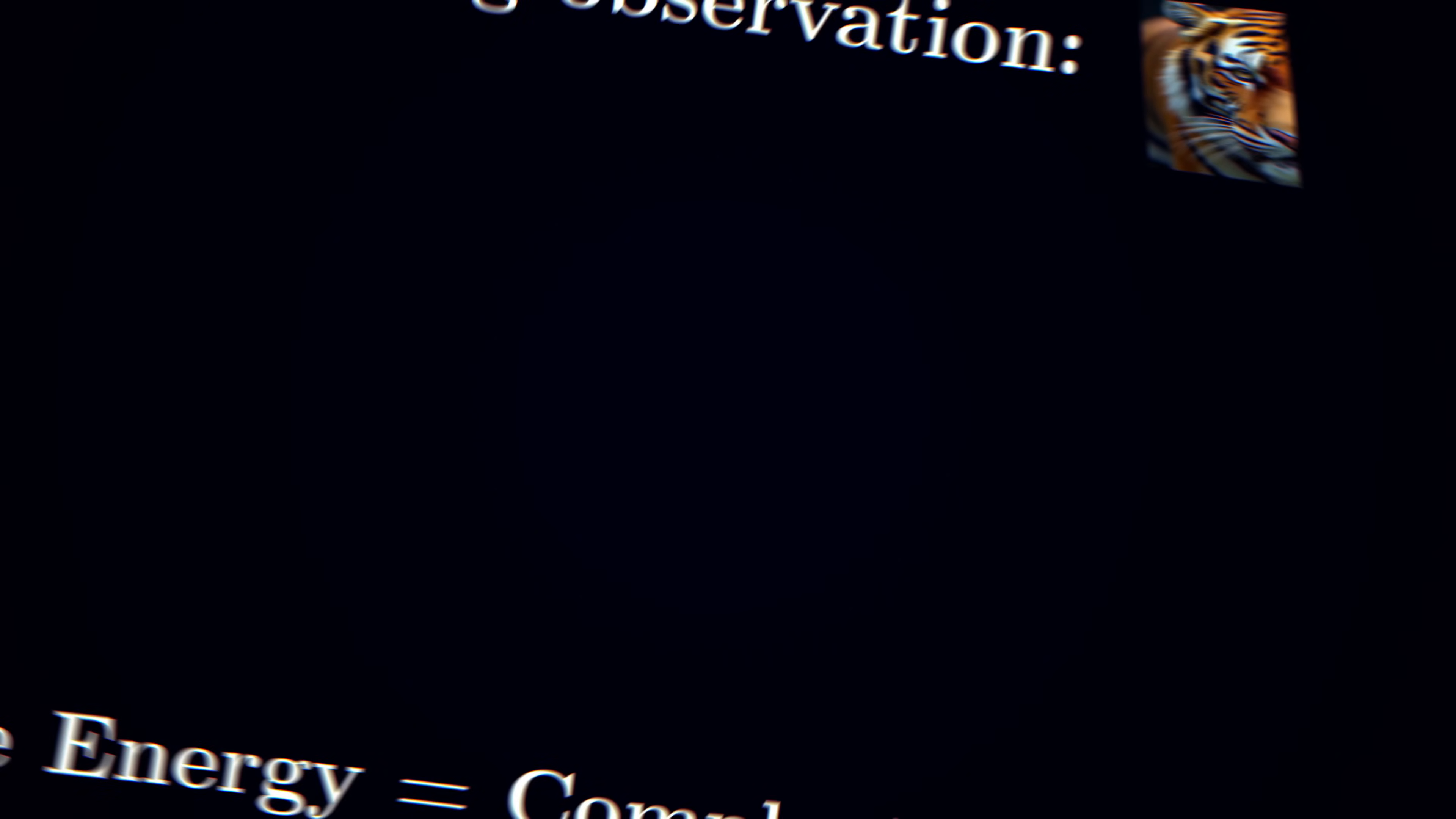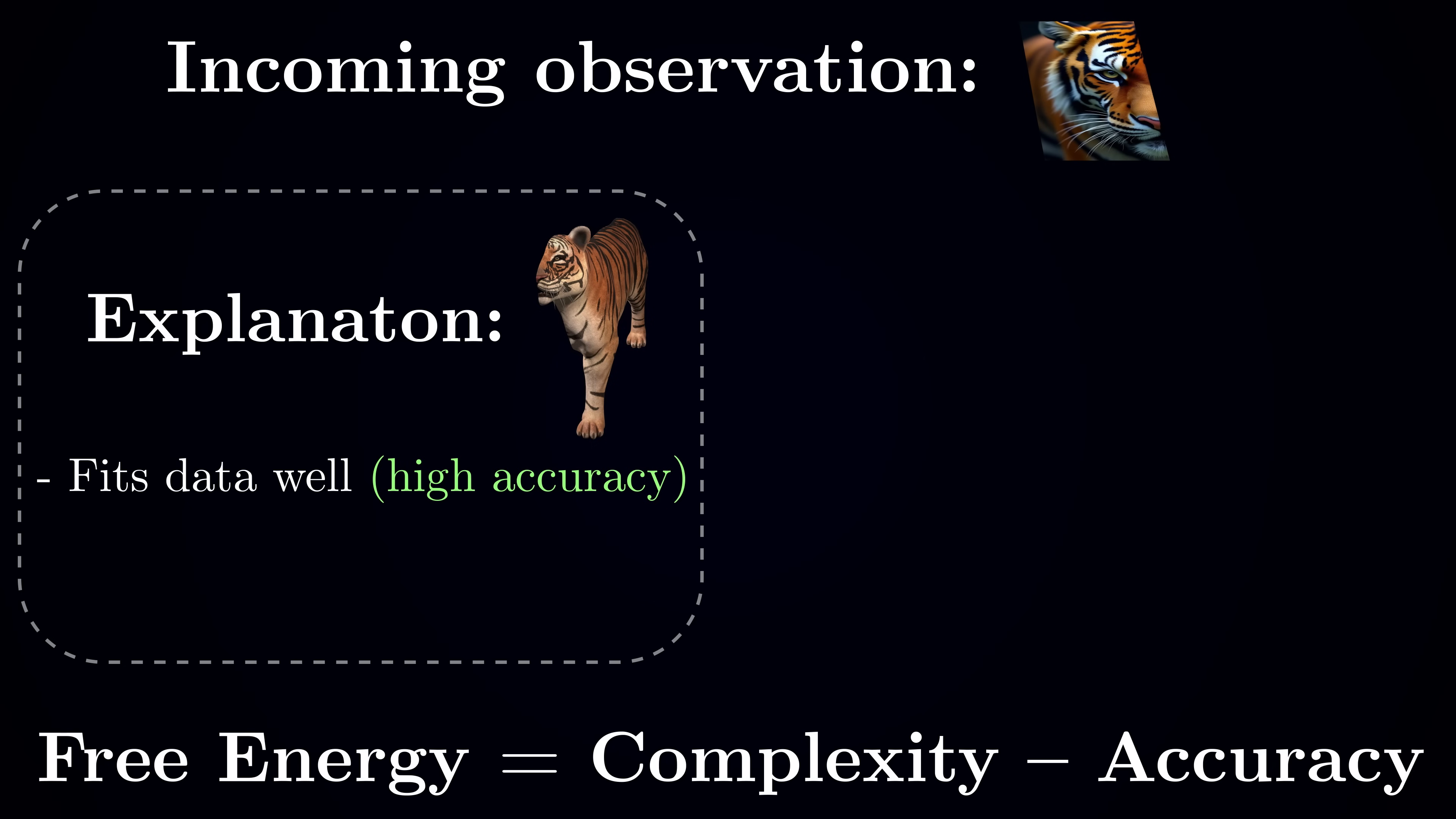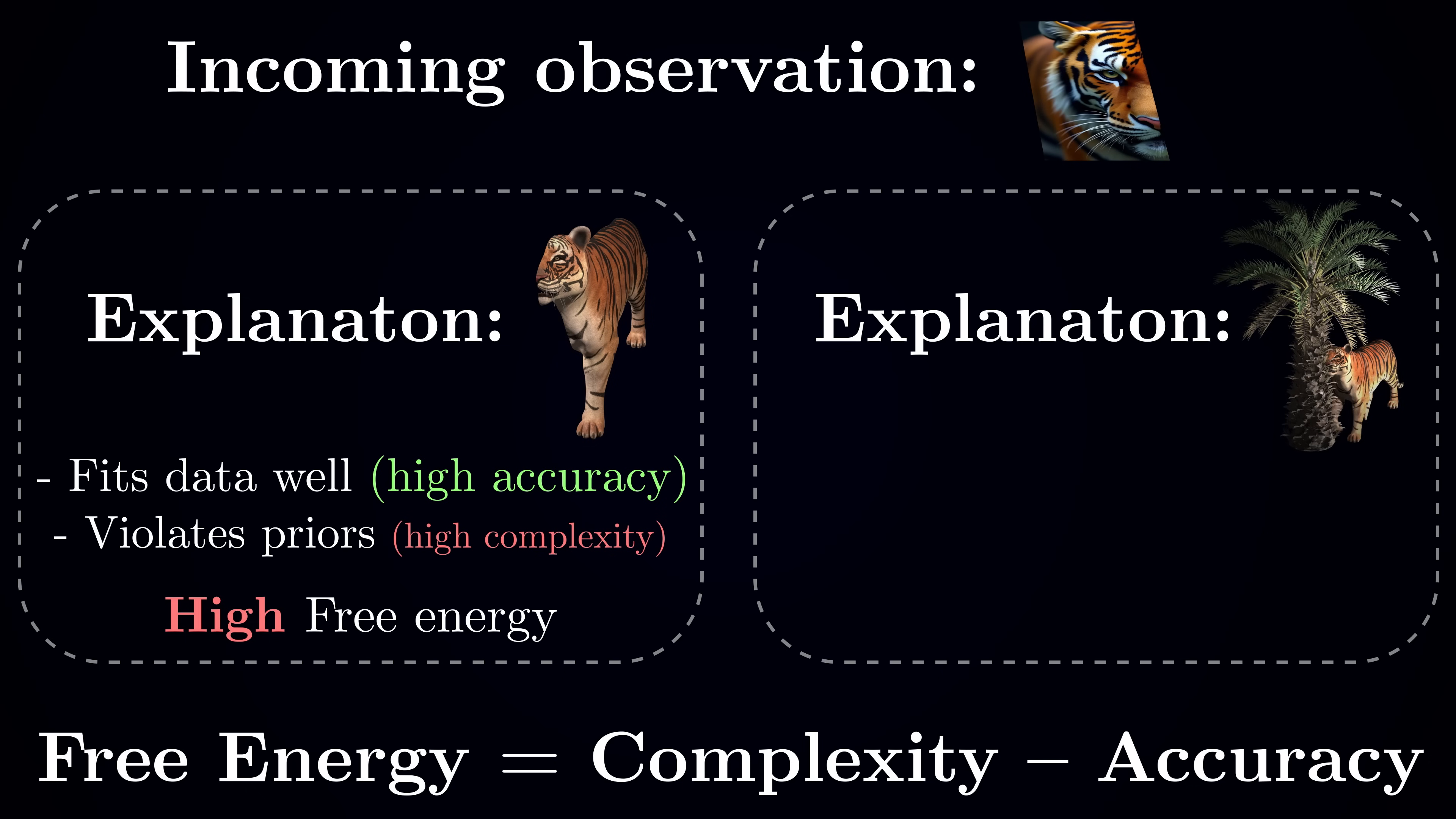Let's go back to our tiger example. When your senses show you half a tiger pattern, that creates a puzzle. One explanation might be that you are seeing a strange half-tiger creature, but that explanation would have very high free energy. It conflicts strongly with your prior knowledge that tigers are whole animals that are symmetric. The other explanation, that it is a complete tiger partially hidden behind something, has a much lower free energy. It fits both what you are seeing and what you know about how the world works.